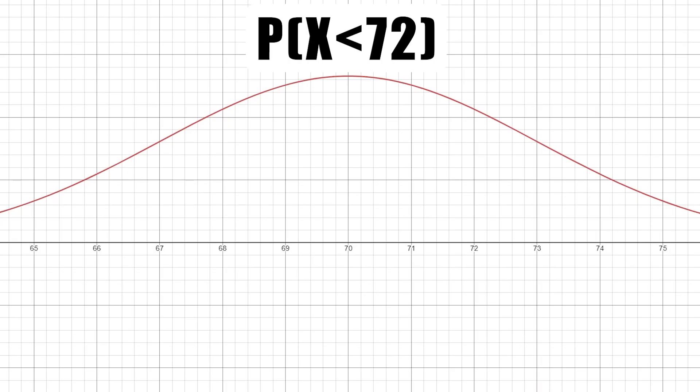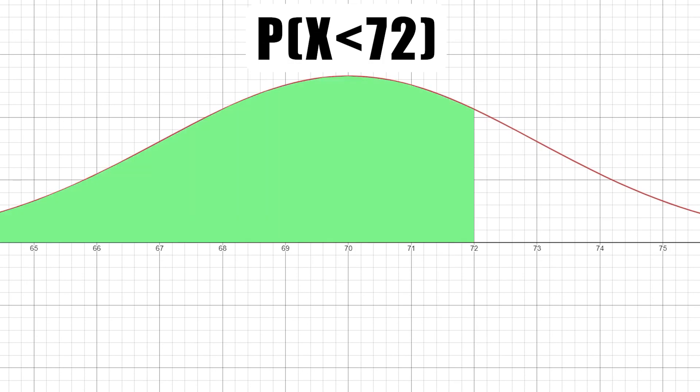This is like saying, what is the probability that a randomly selected male is under 72 inches? We answer this by plugging in 72 into the CDF and checking what we get. The answer is 0.75.